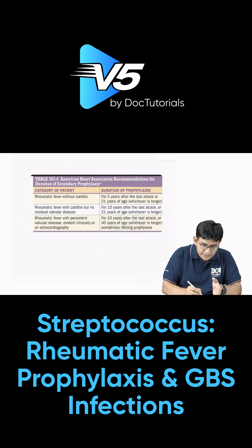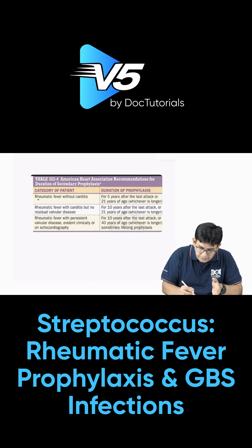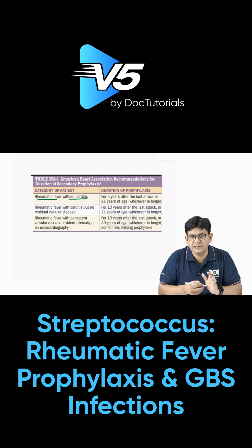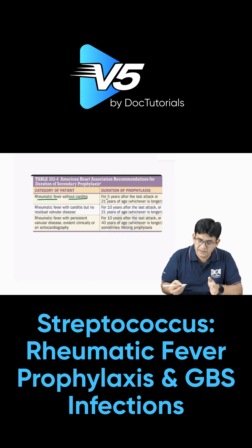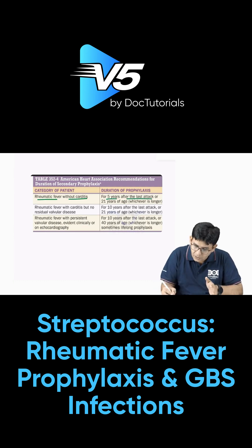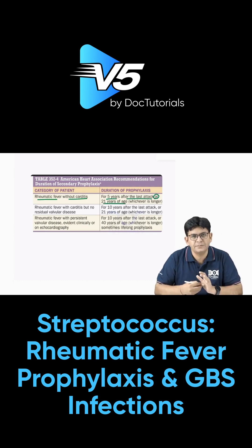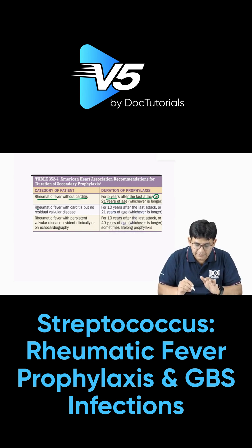This is the table from Harrison's. For rheumatic fever without carditis, the duration of penicillin prophylaxis is five years after the last attack or 21 years of age, whichever is longer.